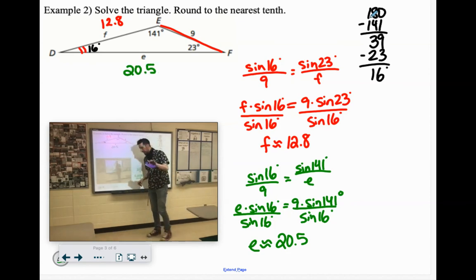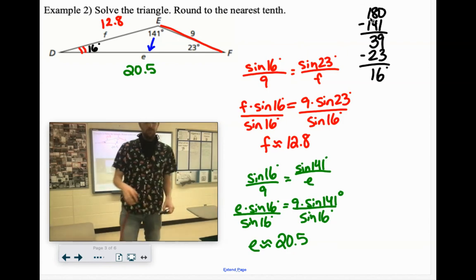Hey, things to look for to make sure your triangle is correct. The largest angle will be across from the longest side. 141 is our biggest angle, and it's across from the largest side, 20.5. The smallest angle, 16 degrees, is across from the smallest side, 9. And the medium angle is across from the medium side. So if something doesn't work there, go back and check your work. I'll stop this and we'll start the next one.